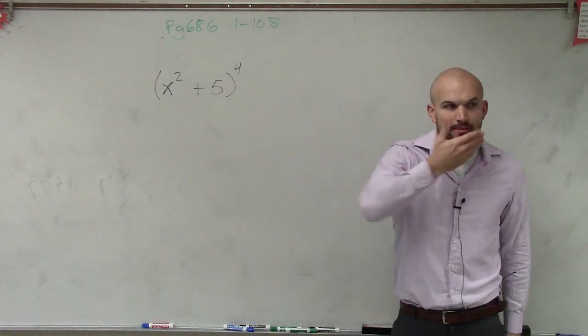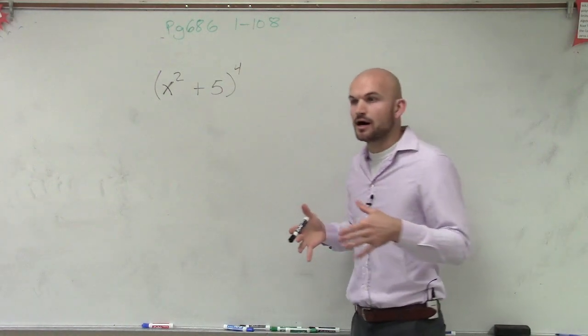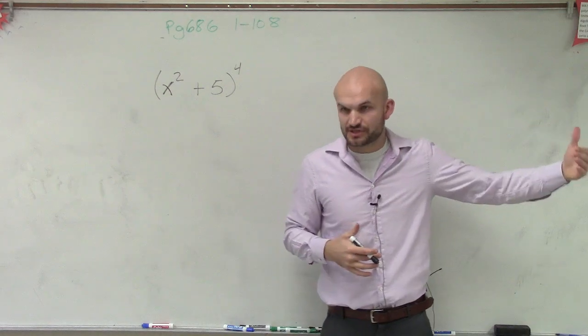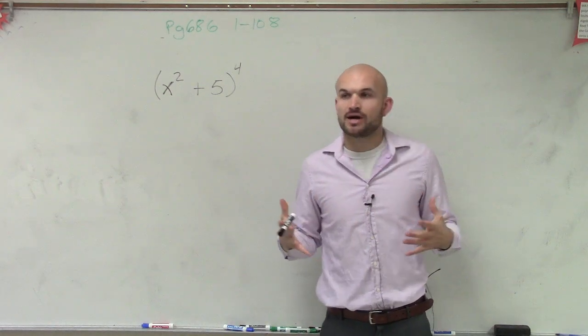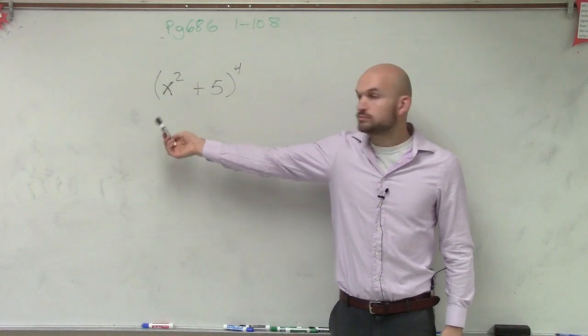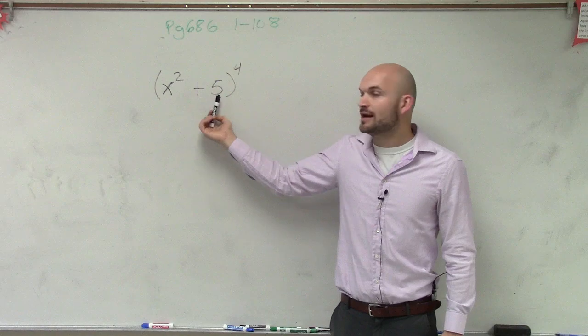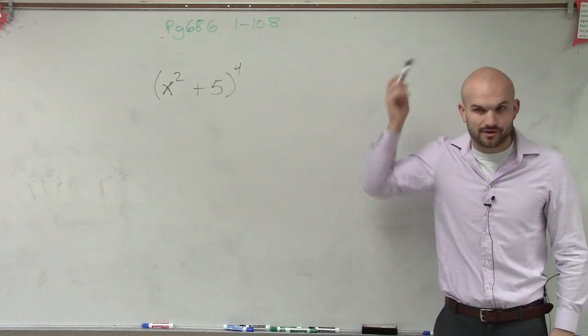So hopefully if you guys remember when we talked about this, we talked about the binomial expansion. There's a couple things that we looked at. One, that there was a relationship with the coefficients. And two, what we also looked at is the degrees of our first term started at 4 and then went down in descending order. And of our second term, started at 0 and then went in ascending order.